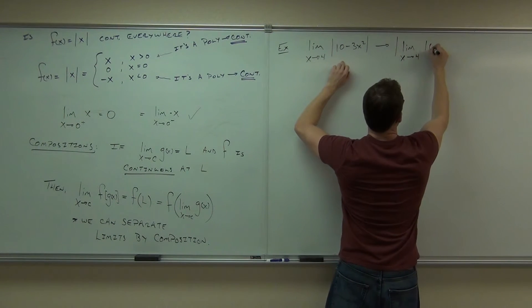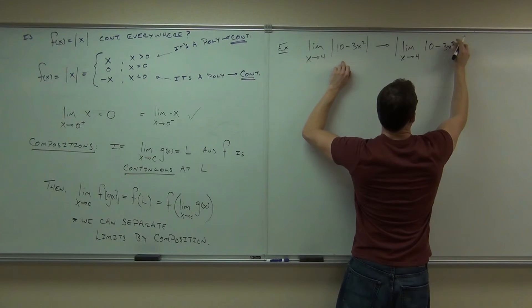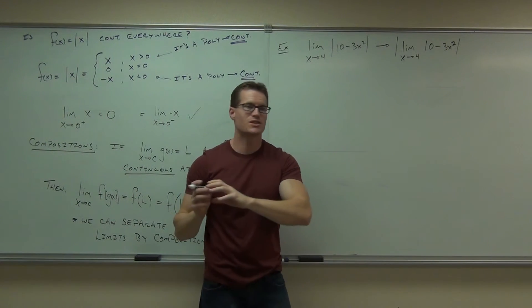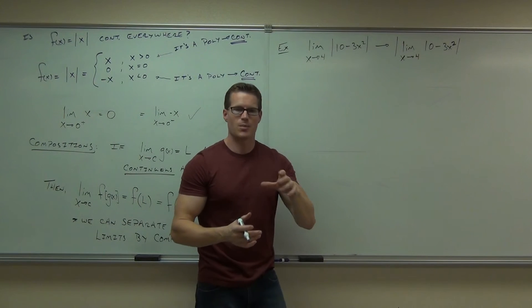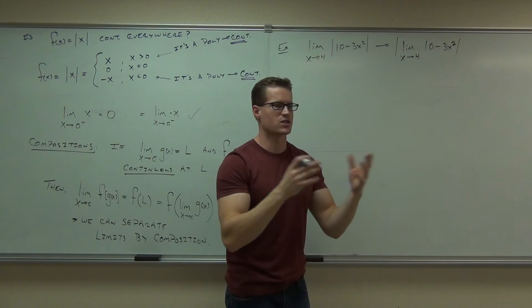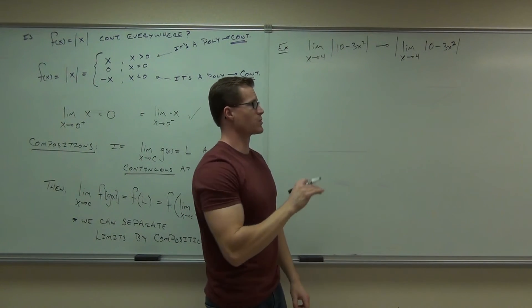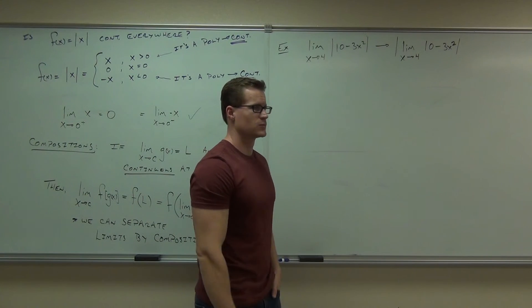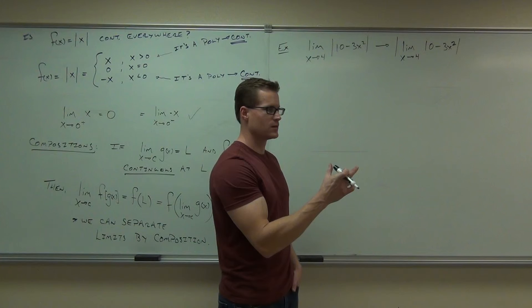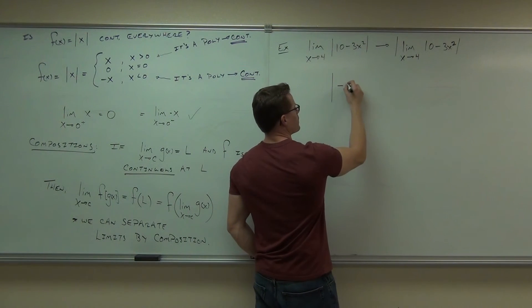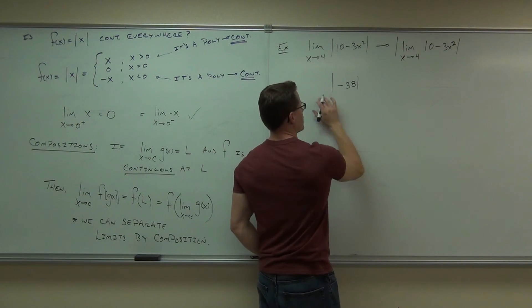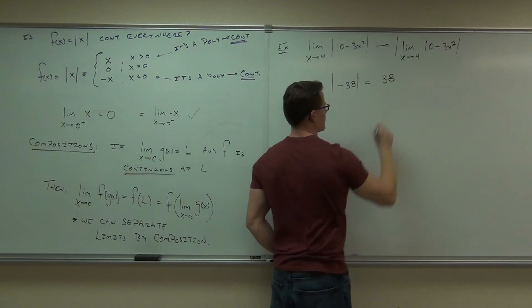If you remember, I actually did that with cosine before. Remember me doing that with cosine? The reason why we could do it is because cosine is continuous everywhere, and now I've proved it for compositions. We used it earlier, but I've proved it now that we can in fact do that. So we say take a limit of this and then take the absolute value, and that will work just fine for you. You can separate limits by composition. What's the limit of 10 minus 3x squared as we approach 4? Negative 38. So this says you'll have the absolute value of negative 38, because the limit of 10 minus 3x squared is polynomial. If you plug in the number you get negative 38. Then we take the absolute value of negative 38. We get 38, and that's our answer. So the limit would be 38.